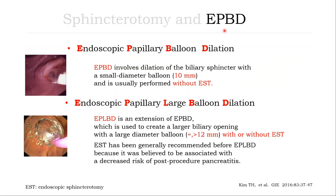Moving to the next topic: EPPD — Endoscopic Papillary Balloon Dilation. There are two techniques. The first technique, EPPD, uses a small-diameter balloon of not more than 10 mm in diameter, usually performed without sphincterotomy. The second technique, EPLBD — Endoscopic Papillary Large Balloon Dilation — uses a large balloon of 12 mm or more in diameter, with or without prior sphincterotomy. Generally, it is recommended to perform prior sphincterotomy to minimize post-procedural pancreatitis.